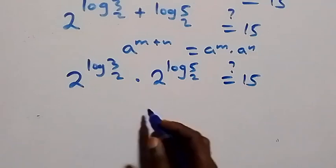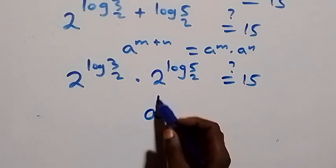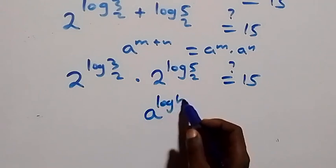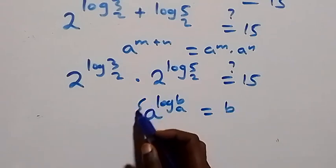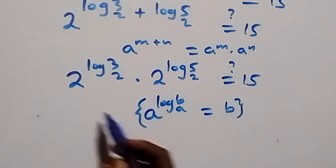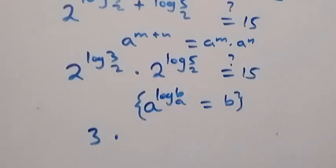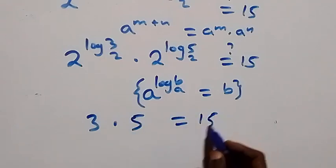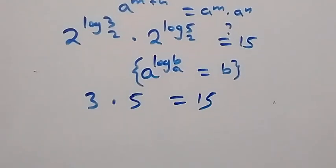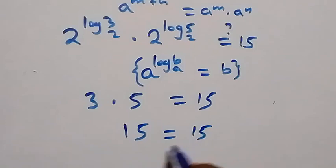Then follow the law of indices from logarithm: a raised to power log b to base a is the same thing as b. From here that is here, this will be 3, and here this will be 5, and is equal to 15. 3 times 5 is of course 15, which equals 15, and we have the left hand side equals to right hand side.